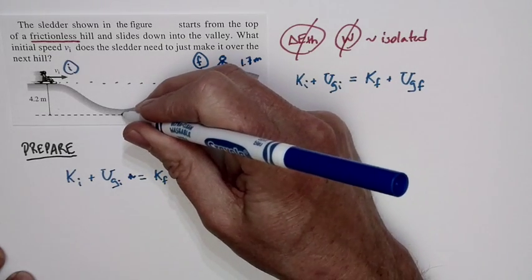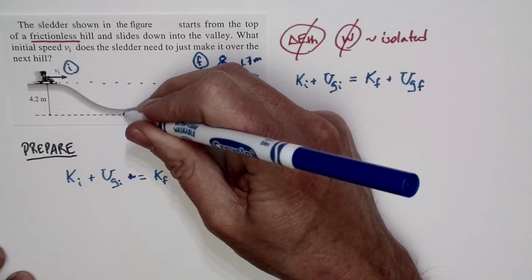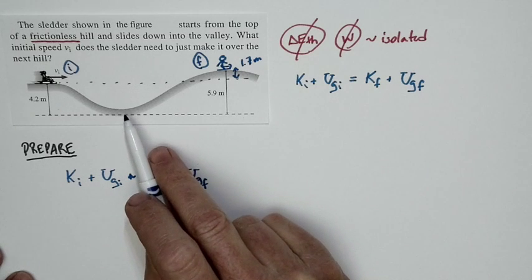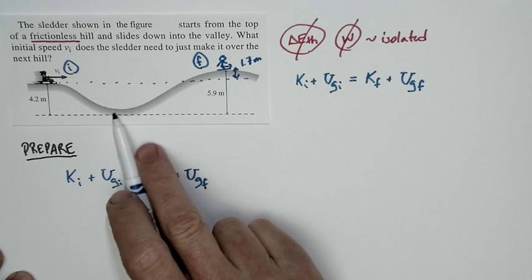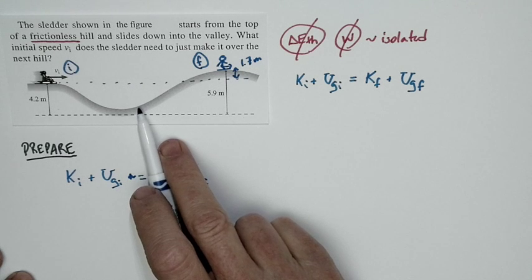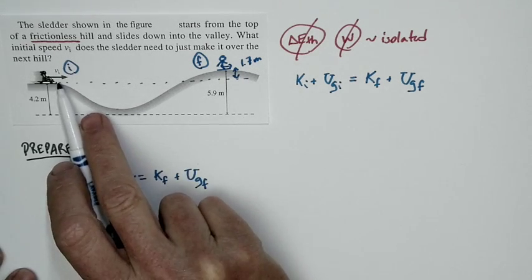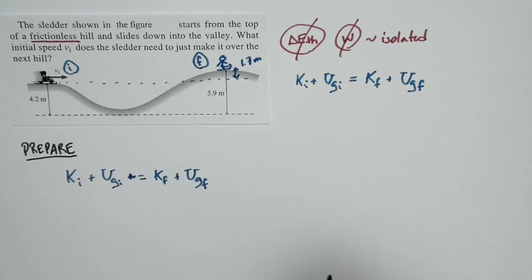That also saves us from worrying about what is the height of the dip. And when I've seen people solve this problem, they get hung up on saying, oh, we don't know the depth of the dip. And the reason we don't need to know the depth of the dip is we only care about the initial state and the final state.